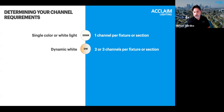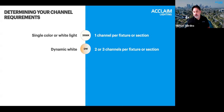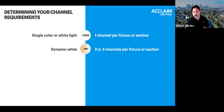For a dynamic white product, Acclaim products will use two or three channels to control the mix of white color temperatures. You can check which mode your fixture uses on the specification sheet or in the user guide for that particular fixture. Our dynamic white fixtures are also more commonly known as tunable white, and we offer several variants of that for our product line.